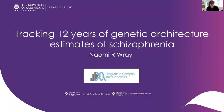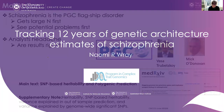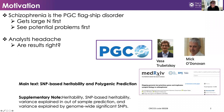Hello. Today in this short talk, I'm going to talk about tracking 12 years of genetic architecture estimates of schizophrenia. My target audience for this talk are really analysts from the PGC. The work I'm talking about comes from the latest PGC schizophrenia paper, which is currently on MedArchive, and is particularly work with Vassa and Mick as we drill down into some results found in the main text section on SNP-based heritability and polygenic prediction, and also a supplementary note.